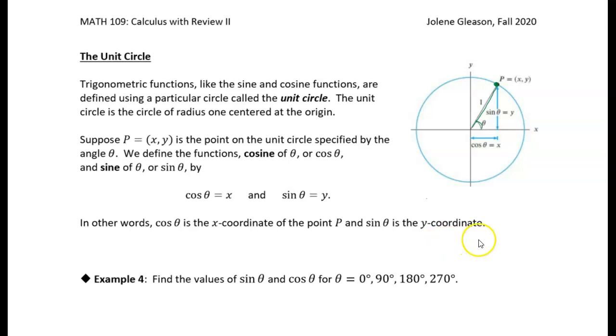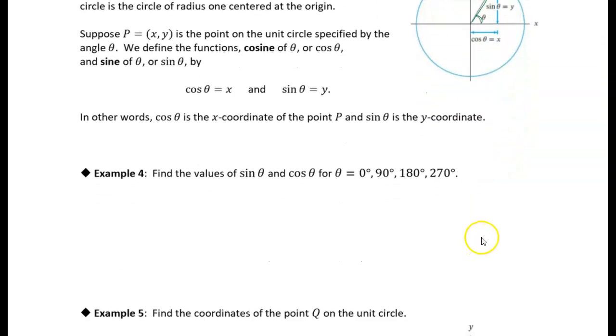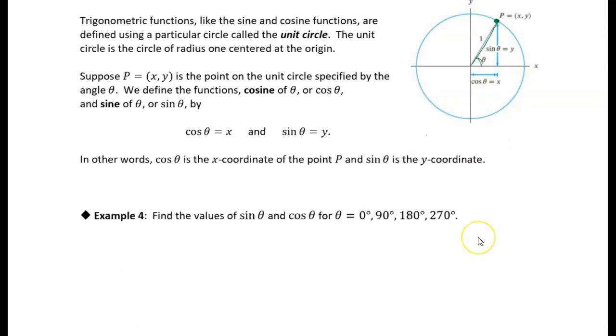All right, so let's take a look at example four. Let's see if I can get these both on the same page here. All right, we want to find the values of sine and cosine for the angles 0, 90, 180, and 270 degrees. All right, so let's make a little table out of this. I think it'll be easier to see it as a table. So I'm going to,